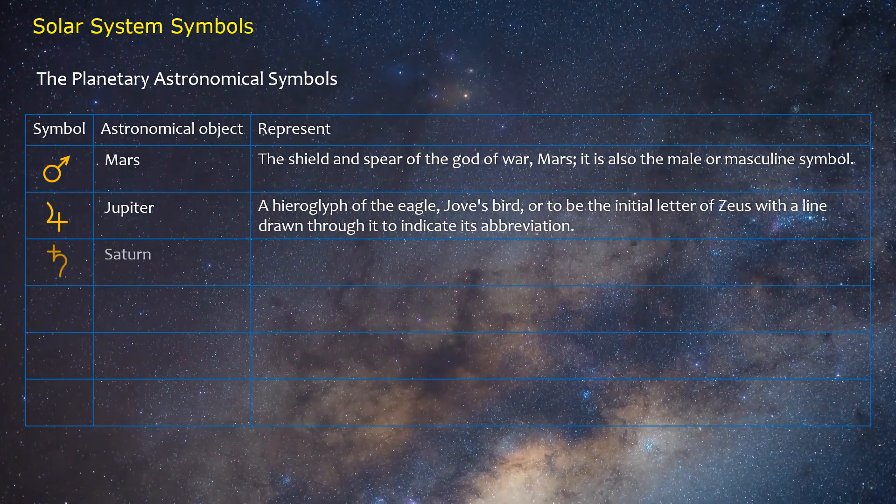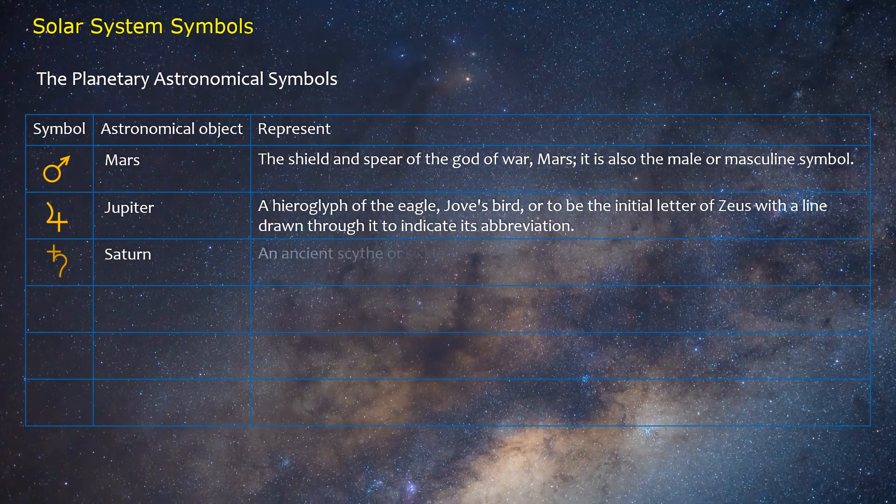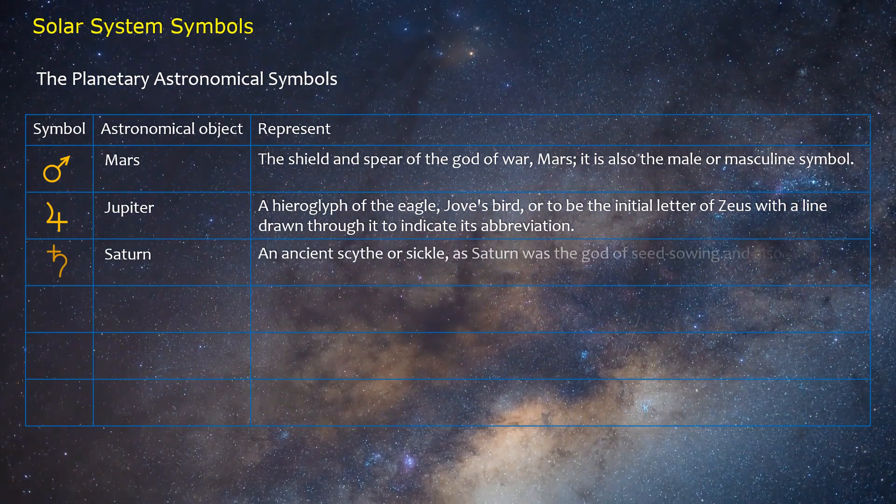Saturn: An ancient scythe or sickle, as Saturn was the god of seed-sowing and also of time.